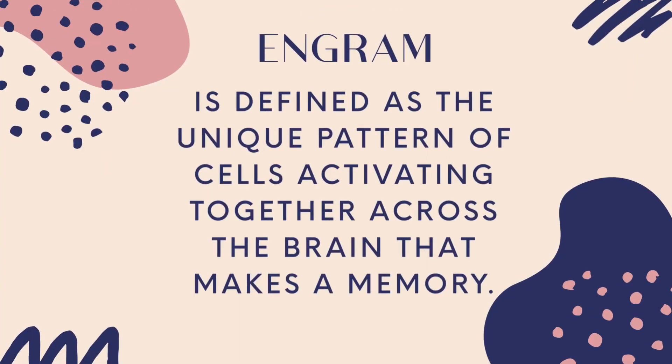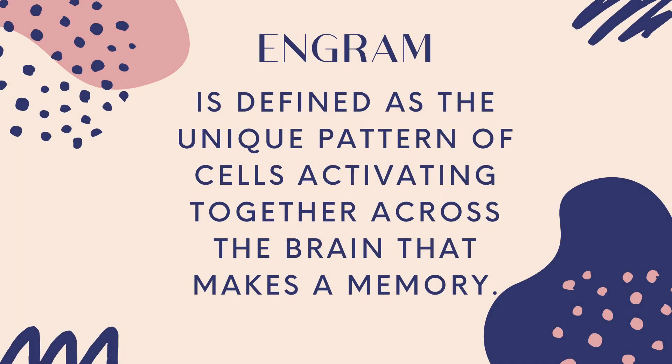Where are memories stored? When we experience or see something — like that! Bam! — your brain picks a bunch of cells to store the memory of what you experienced and activates them all at the same time. Those cells aren't all in the same place, because different parts of the brain specialize in different things. Your brain picks cells across those different regions to store different aspects of a memory. For example, the visual cortex stores the memory of what you were seeing, while the amygdala stores the memory of how you were feeling. This whole complex process is called the engram, which is defined as the unique pattern of cells activating together across the brain that makes a memory.